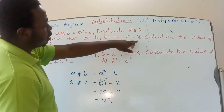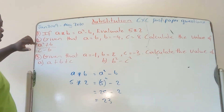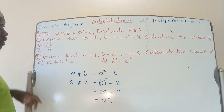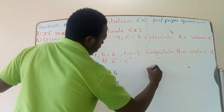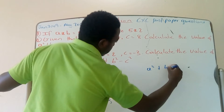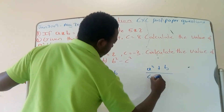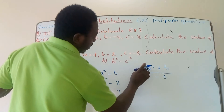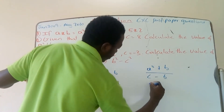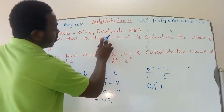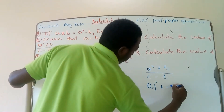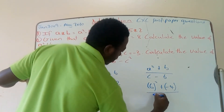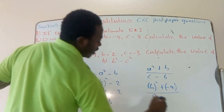The second problem: given that a = 6, b = -4, c = 8, calculate the value of (a² + b) divided by (c - b). We replace a with 6, b with -4, and c with 8. So that's (6 squared + (-4)) all divided by (8 - (-4)).